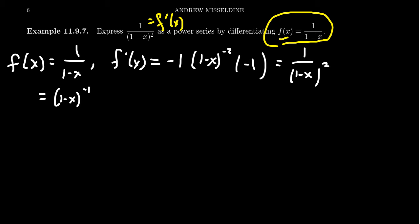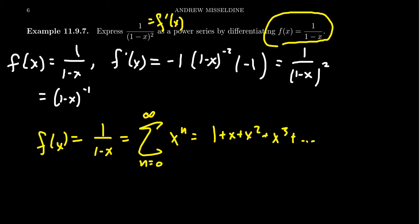The function f, we actually have a power series representation for it. So f(x), which looks like 1 over 1 minus x, its power series representation is the standard geometric series, the sum where n goes from 0 to infinity of x to the n. In expanded form, this would be 1 plus x plus x squared plus x cubed, etc. This is a power series representation for f(x).